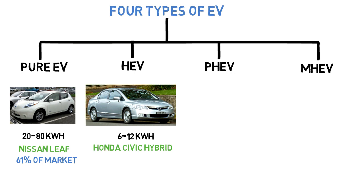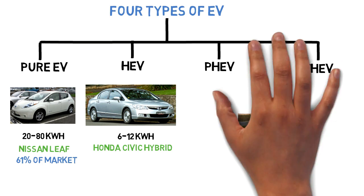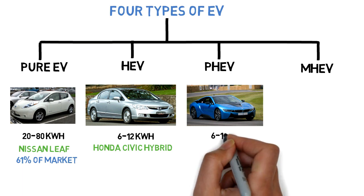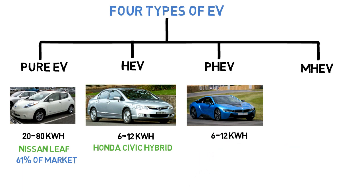The third type of electric vehicle is a PHEV, or plug-in hybrid vehicle. It has an IC engine and an electric motor. The batteries can be charged from an external source through a plug. The battery pack size is medium, 6 to 12 kilowatt hours. An example in this category is the BMW i8.